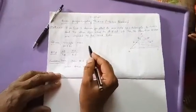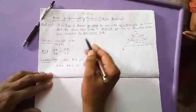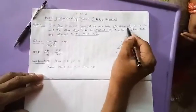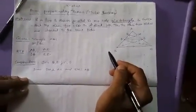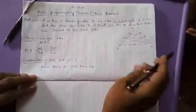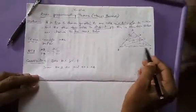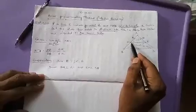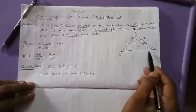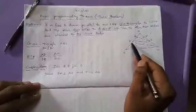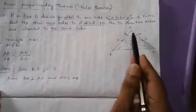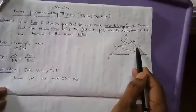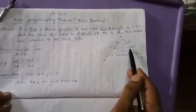For this statement, first we want to draw a figure. I am drawing triangle ABC. In this triangle, I am considering BC as one side. Drawing a parallel line which is parallel to BC, this parallel line intersects AB at D and AC at E, where D and E are the two distinct intersecting points.